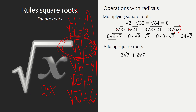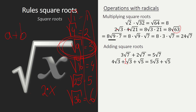What about adding square roots? We have 3 times the square root of 7 plus 2 times the square root of 7. Just like 3 apples plus 2 apples equals 5 apples, this gives us 5 times the square root of 7. For 4√3 plus √3 plus √5, remember there is an invisible 1 in front of √3, giving us 5√3 plus 1√5. We cannot add √3 and √5 together since they are not alike — the square roots must be the same to add them.